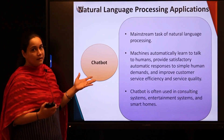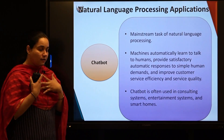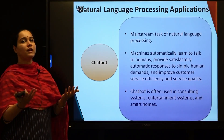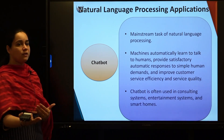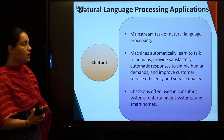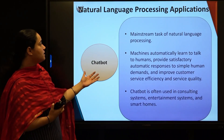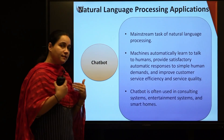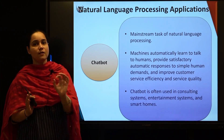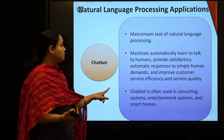The second NLP subcategory is chatbots, which is the mainstream task of NLP. Machines interpret sentences, understand their semantic meaning, and try to respond and satisfy user queries. These days chatbots are widely used — machines automatically learn to talk to humans and provide satisfactory responses to simple human demands. This is efficiently used in all customer service applications today and in entertainment systems and smart homes.